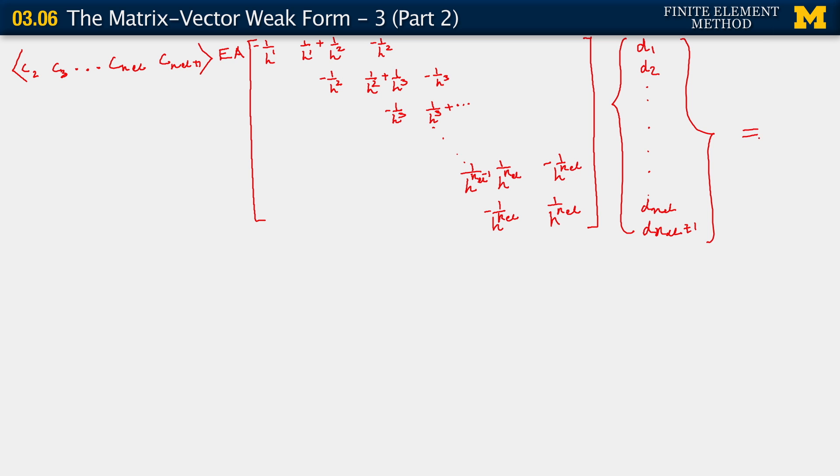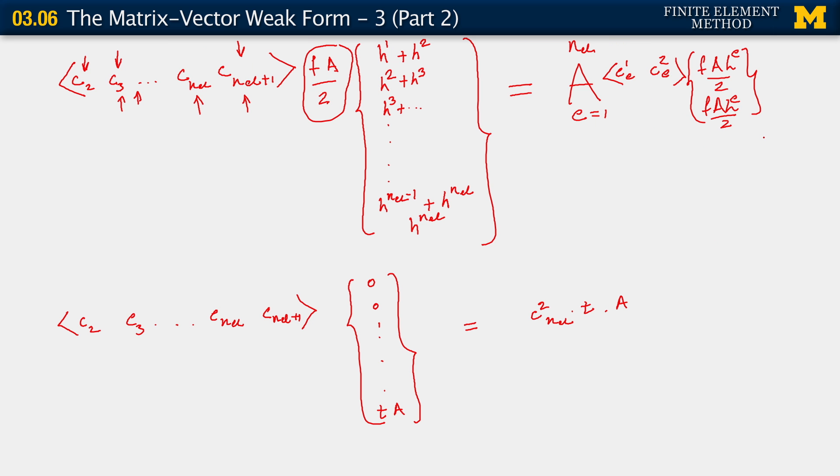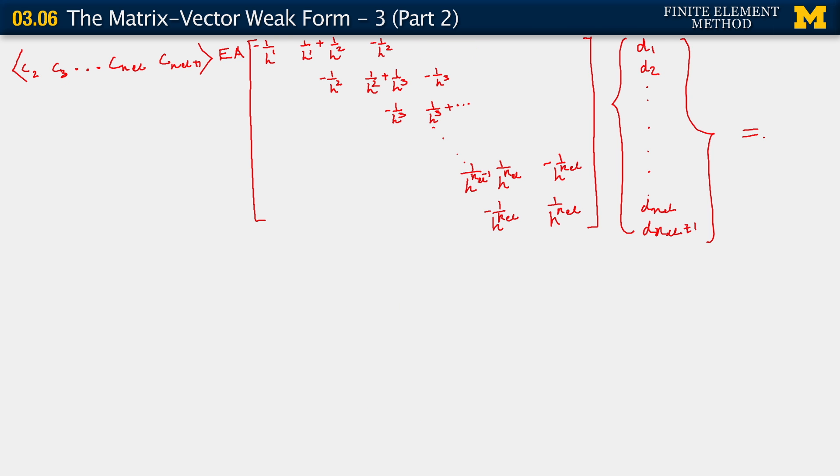And they are equal to terms that came from the right hand side, from the forcing function, as well as the traction. And in order to get those together, let me just go back to this slide, our previous slide. I'll make sure I save it so I can work off it. And then I can come back to where we were. So the right hand side then involves the same vector that we had up here, the same row vector.